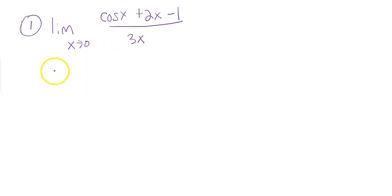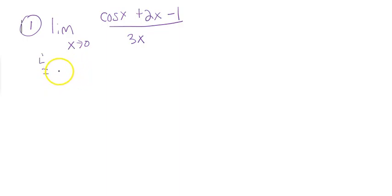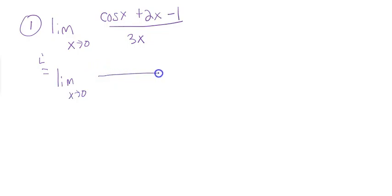When you use L'Hôpital's rule, you want to put a little L with an apostrophe over the equals mark to show that you're using it. The next step is to bring down your limit as x approaches 0, but you take the derivative of the top separately from the derivative of the bottom. This is not a quotient rule situation — do not try to do the quotient rule. It is not the quotient rule.